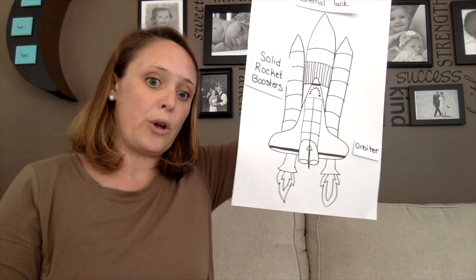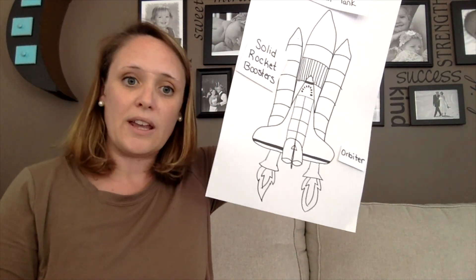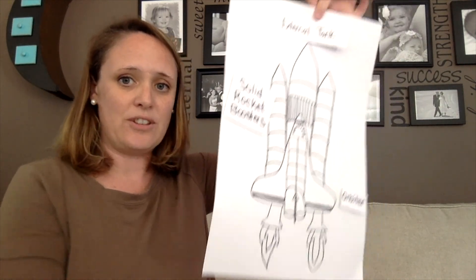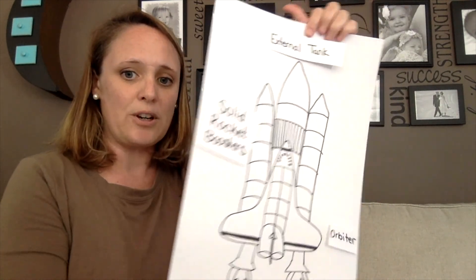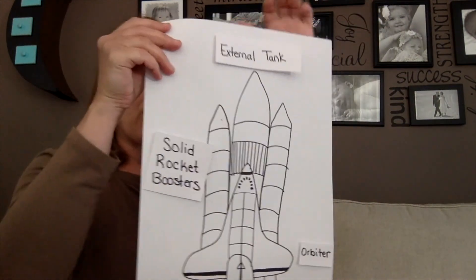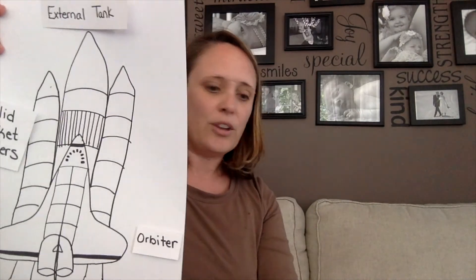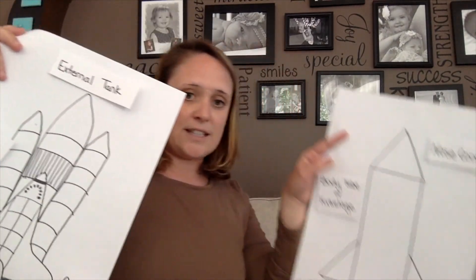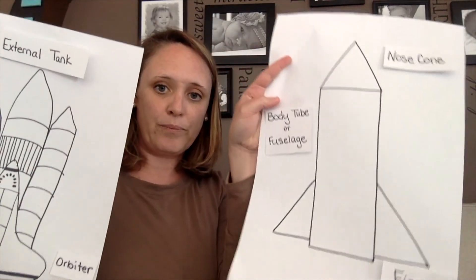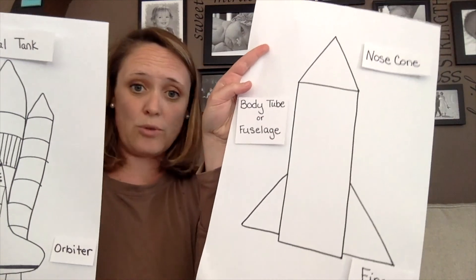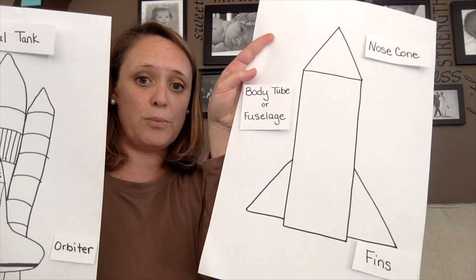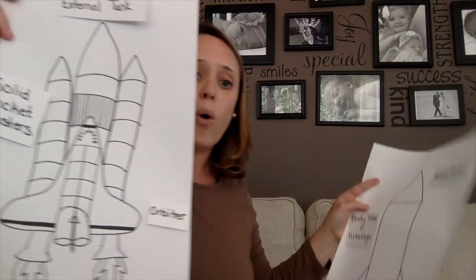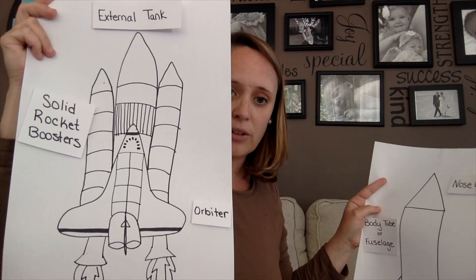That's where the cargo and the main engines are going to be housed inside the orbiter. So when you create your model, you can do a very simple rocket with just your nose cone, your body tube or fuselage, and your fins. Or you can make it more detailed.